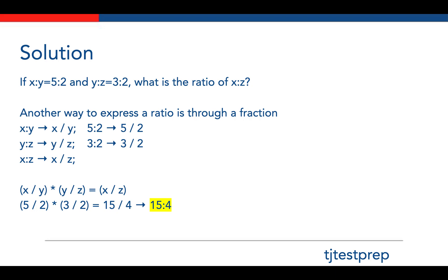So again, converting the ratio to a fraction, multiplying the two fractions together — x over y times y over z equals x over z — and then converting that fraction back to a ratio. That's how you get the final answer, which is 15 to 4.